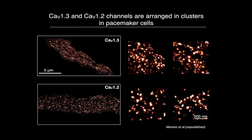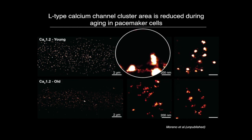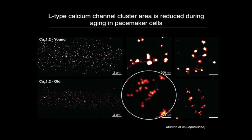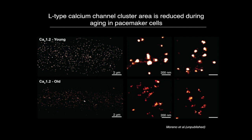Both channels — CAV1.3 and CAV1.2 — show nicely formed clusters. But interestingly, when we compare young versus old animals, in young animals we saw the classical clustering of the channels, while in old ones we saw a complete de-organization of the clustering. What's happening here could be many things we are evaluating right now: problems in the trafficking of the channels, problems in the scaffolding keeping these clusters together, or a big change in the turnover of the channels — all open questions we are starting to test.